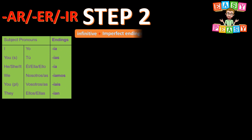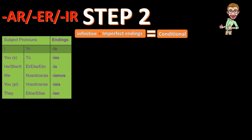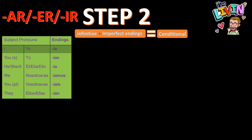We're going to do all of them at the same time, into step two. We're going to start in order with yo, and the ending -ía, with the verb vivir. So vivir plus the ending -ía is going to be viviría.